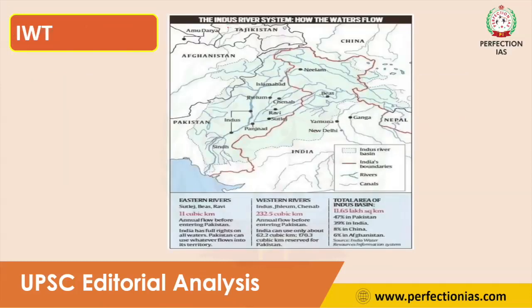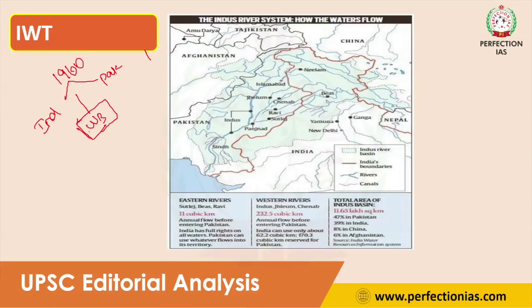The Indus Water Treaty was signed in 1960 between India and Pakistan. The main purpose of this treaty is to share the water of the Indus and its tributaries peacefully between India and Pakistan.